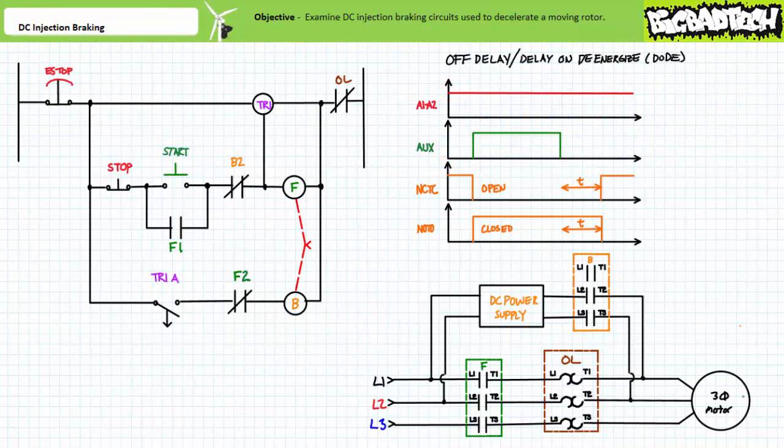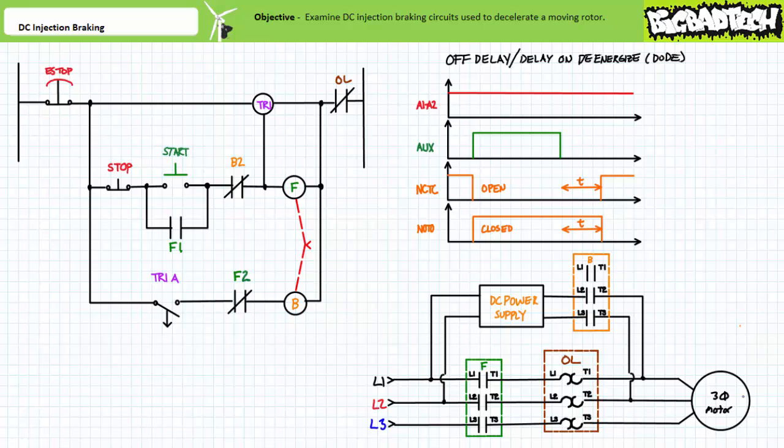This particular circuit makes use of an off-delay timer set for, let's say, two seconds—the exact time necessary to decelerate this rotor to a standstill. If the rotor required more time to decelerate, this delay would need to be increased. If the rotor stopped earlier than two seconds, this delay setting would need to be decreased. It may be helpful to review the behavior of an off-delay timer before we continue.